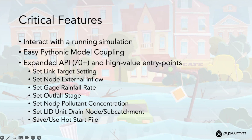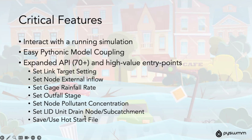We added being able to set node pollutant concentration. We have a lot of features in LID that allow you — for example, if you're building a drainage method of LID — to direct flow to a different node or a different subcatchment during the simulation. The latest feature we just added was the ability to save and use a hot start file during any point in the simulation, which would then be usable through the API once you wanted to restart a simulation.